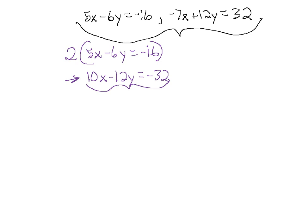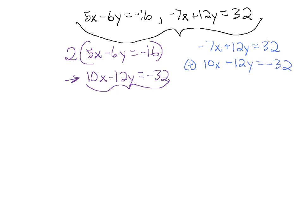Now we combine these two equations by addition, which will cancel one variable. We write minus 7x plus 12y equals 32 and add to it 10x minus 12y equals minus 32. The y-terms cancel, leaving us with 3x equals 0, which means x equals 0.